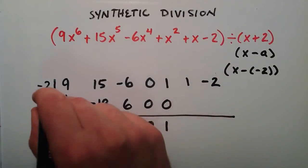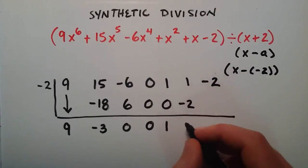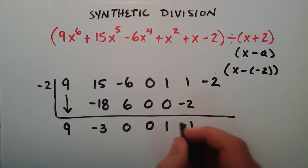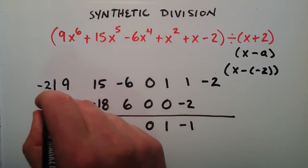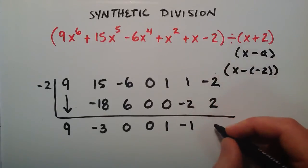Now we have a 1 plus 0 which is 1. 1 times a negative 2 is a negative 2. 1 plus a negative 2 is a negative 1. And then negative 1 times negative 2 is a positive 2. Then adding these together, negative 2 plus a positive 2 give us a remainder of 0.